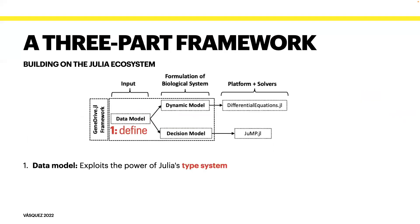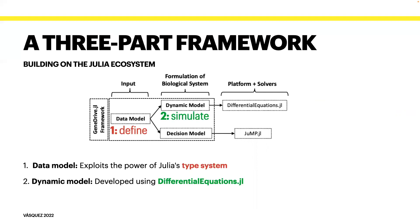Part one of the GeneDrive.jl framework is its data model, an abstraction that uses the Julia type system to define simulation inputs, store them, and dispatch methods. Part two is the dynamic model, an ordinary differential equation formulation of the biological system that builds on DifferentialEquations.jl. Part three is the decision model, which discretizes the ODE formulation to create a nonlinear mathematical program for optimization and uses JuMP.